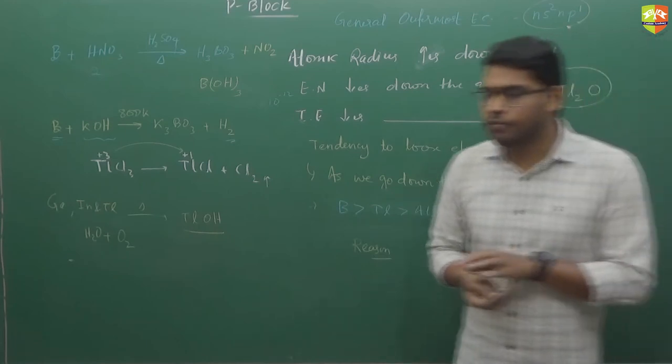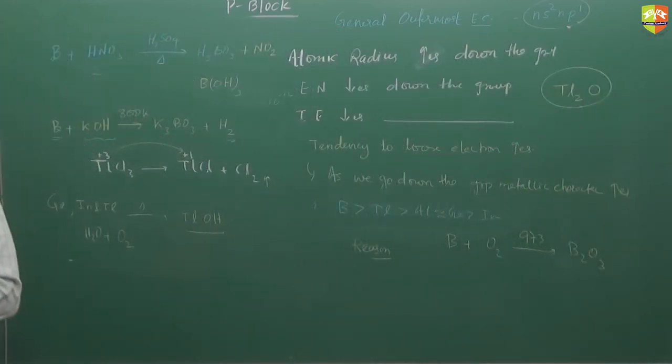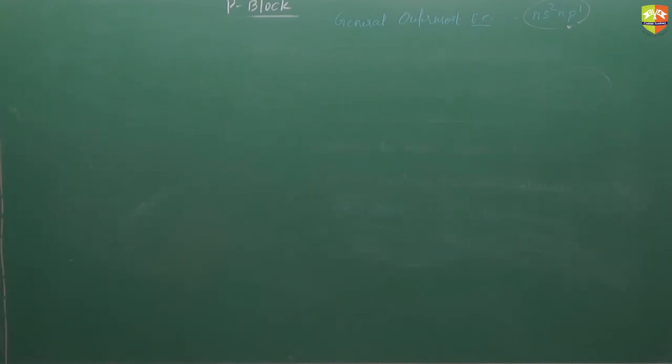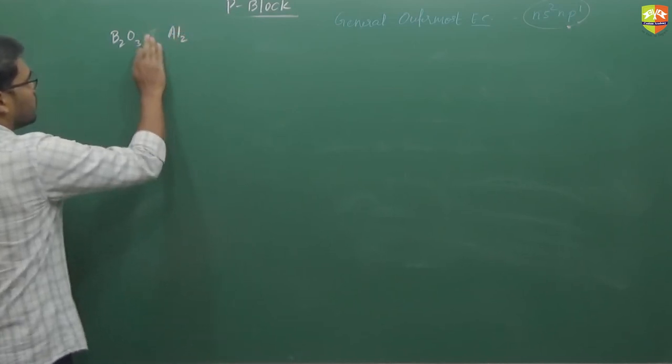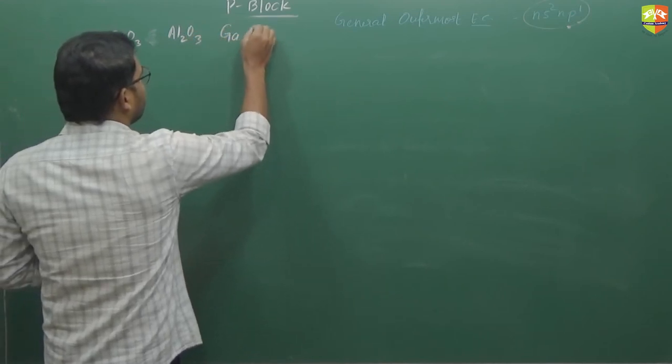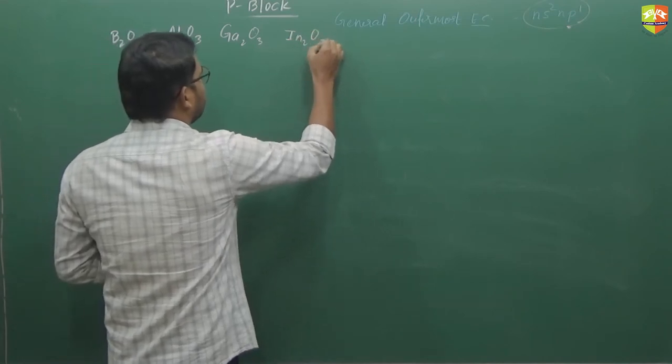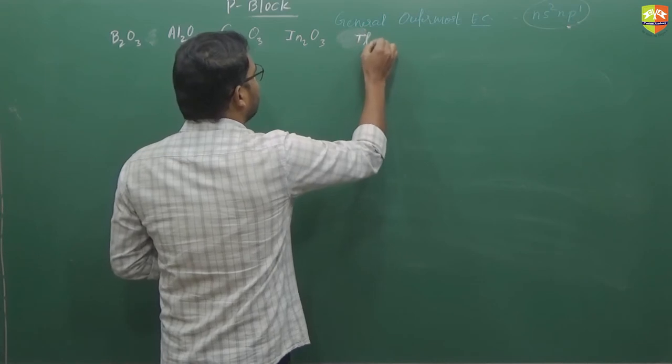Write down the acidic behaviour of oxides. As we go down the group, the acidic behaviour of oxides decreases. So the order is B2O3, Al2O3, Ga2O3, In2O3, Tl2O3.